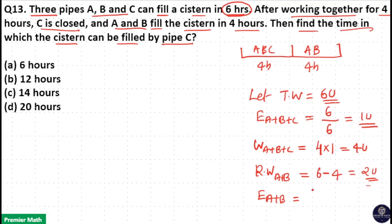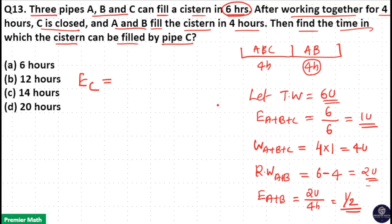Now, the efficiency of A and B is 2 units divided by 4 hours, which equals 1/2 unit per hour. So efficiency of A and B together is 1/2, and efficiency of A, B and C together is 1 unit. Then efficiency of C equals 1 unit minus 1/2 unit, which gives 1/2 unit per hour.